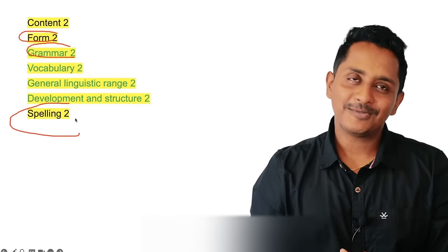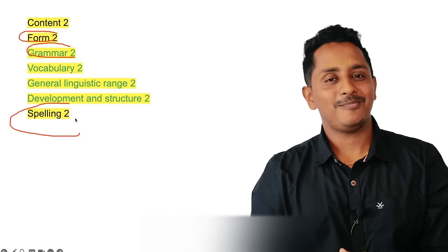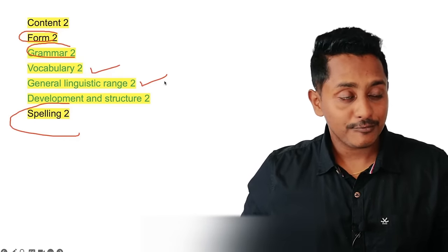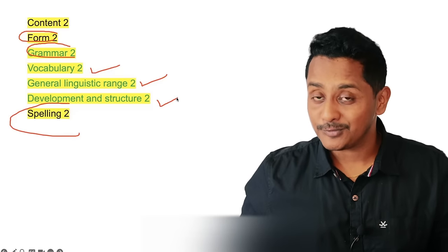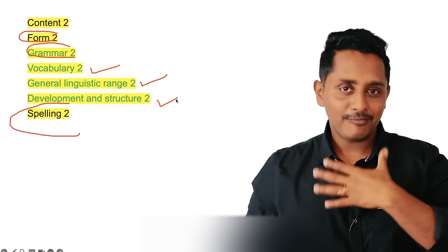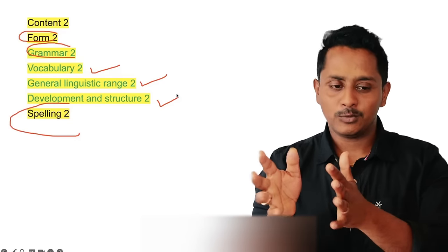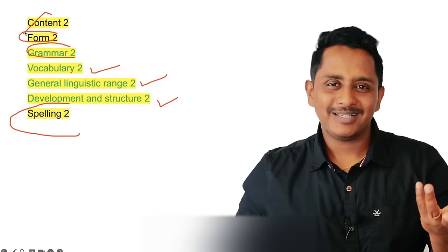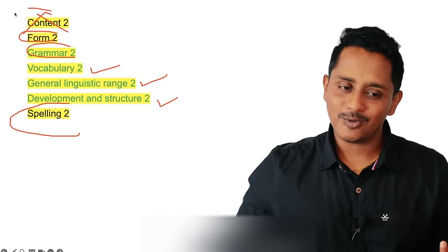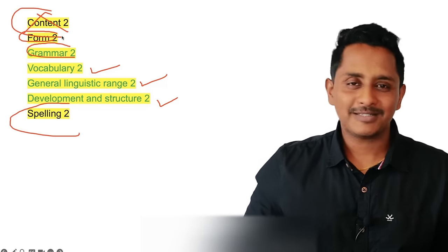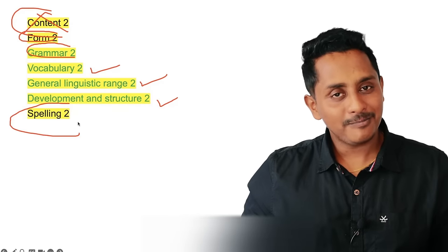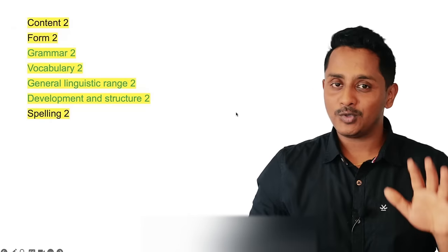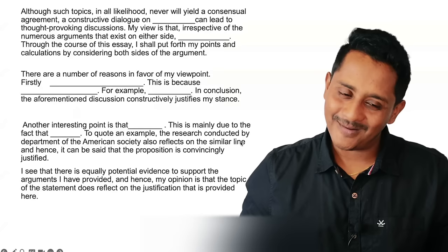Form, grammar, and spelling are the most important. Vocabulary, general linguistic range, and development and structure you don't have to worry about because the template we provide covers all of that. Content — yes, you need to write something, so it is also important to some extent. But spelling, form, and grammar are the top priorities. In this video I'll show you how to make sure we get 2 marks for each.